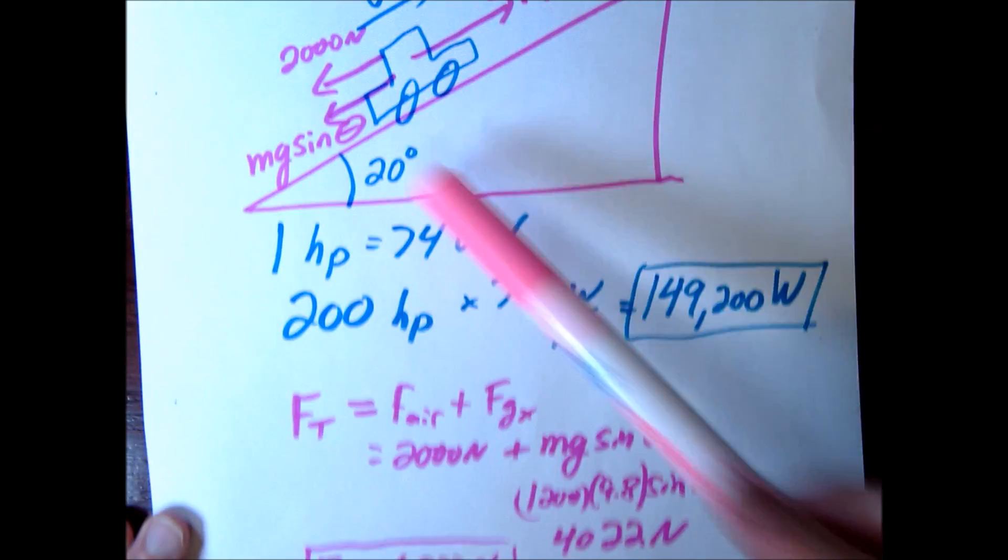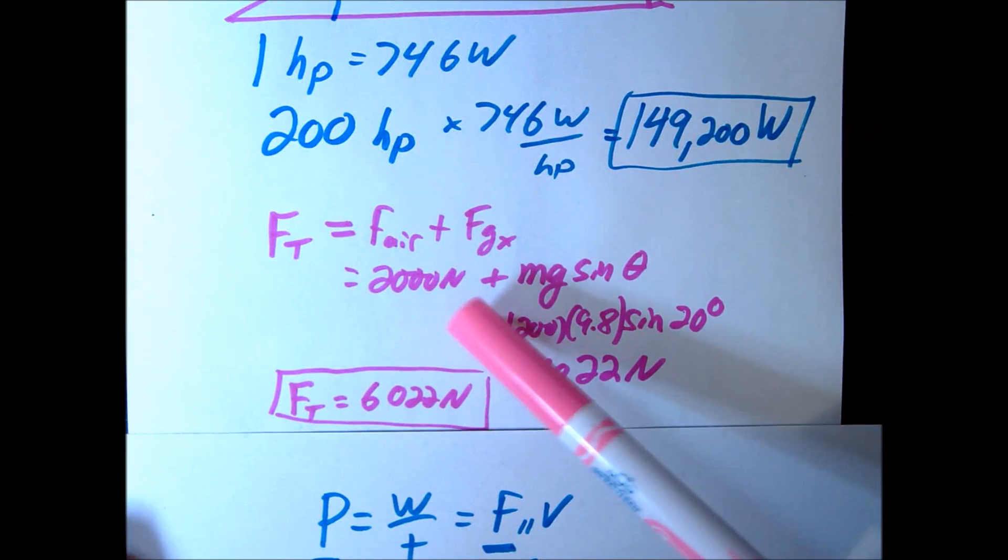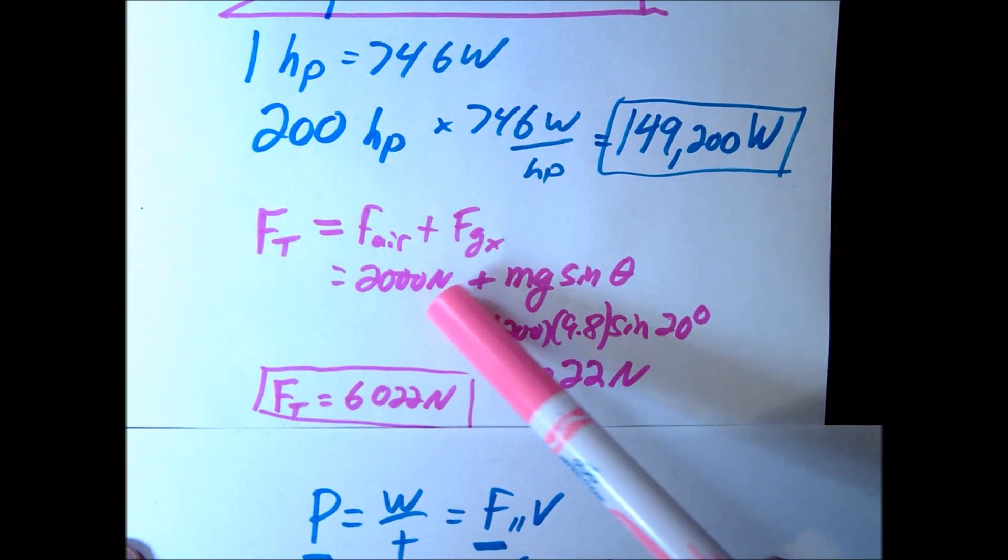Notice also, if we weren't on this incline, if we were just on a straight road, for example, then the resistance force wouldn't be the 6022. It would only be 2000.